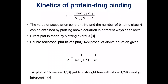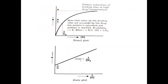The second method is the double reciprocal plot, which is the reciprocal of the above equation. Taking the reciprocal of r equals n·Ka·D divided by (Ka·D plus 1) gives: 1/r equals 1/(n·Ka·D) plus 1/n. By plotting 1/r versus 1/D, we get a straight line, and from the slope we can determine the value of n as well as the value of Ka.